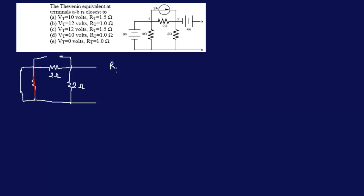So what are we left with? We only have two 2-ohm resistors in parallel. RT would be 2 parallel with 2, which is 4 over 4, equal to 1 ohm. Right away we can eliminate answer A and another one, so two answers are gone.